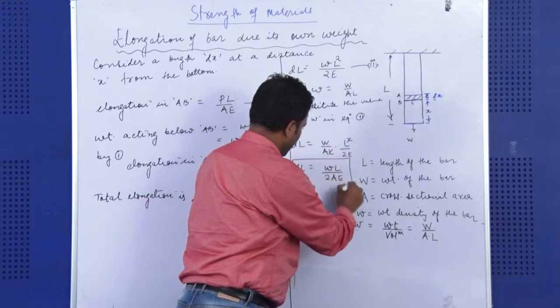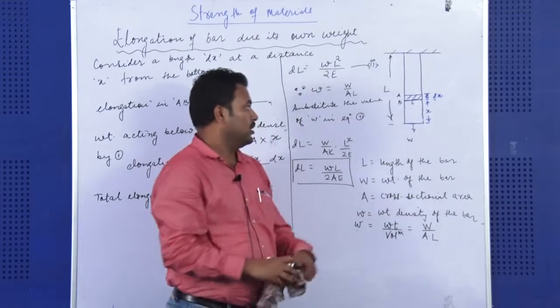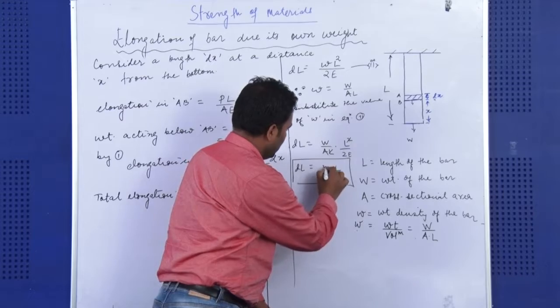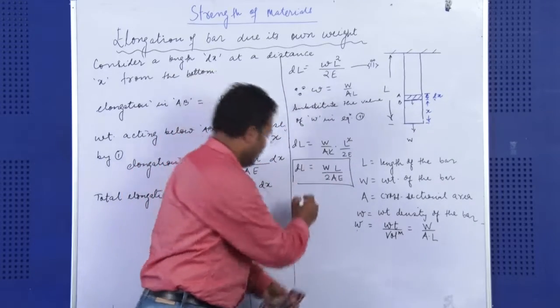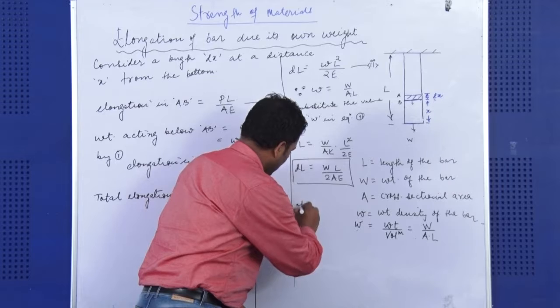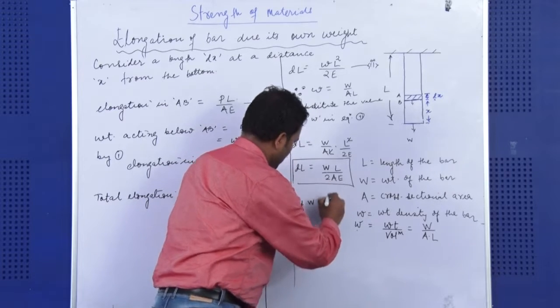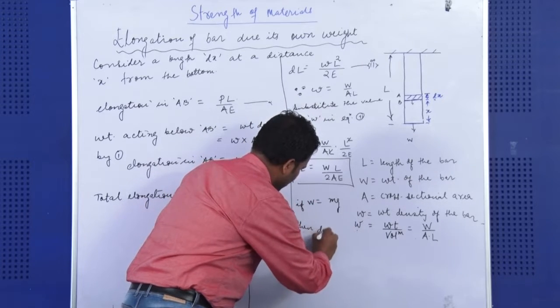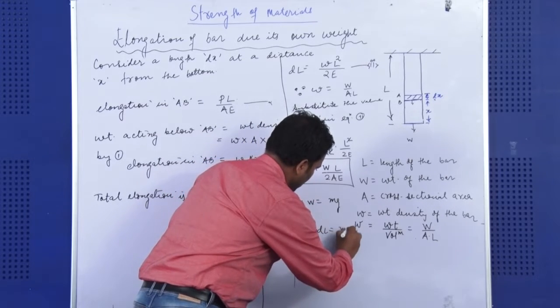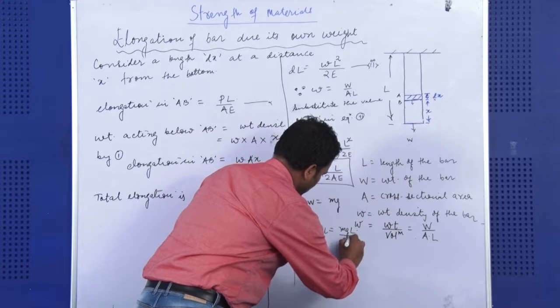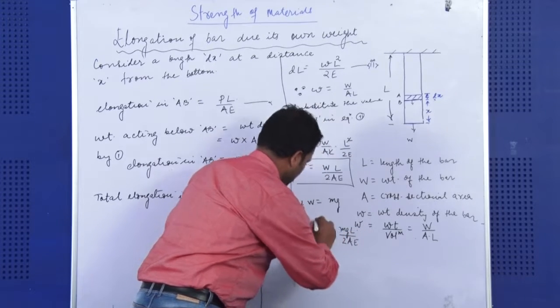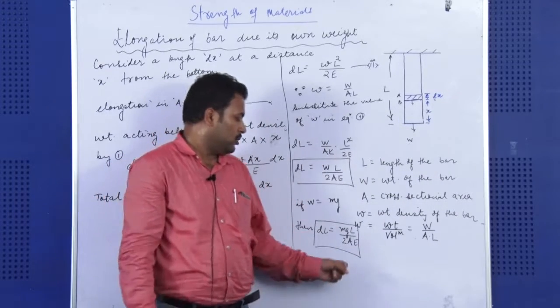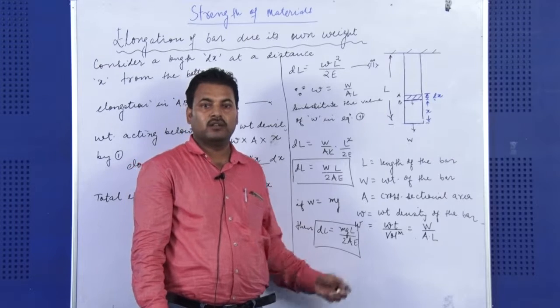This is the elongation of a bar due to its own weight. If we replace this capital W, WL by 2AE, if I can write W by MG, then we can get DL is equal to MGL by 2AE. So these are the expression for elongation of a bar due to its own weight. Thank you.